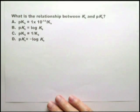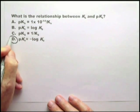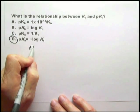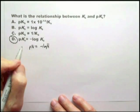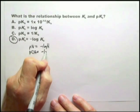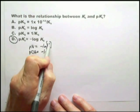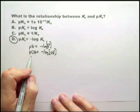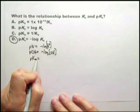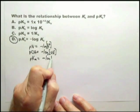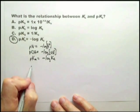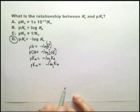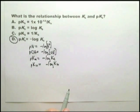This relationship is so important you just have to remember it. It occurs for KB, for pH equals minus log H, for pOH equals minus log OH minus, and for pKa equals minus log Ka, and for water, pKw equals minus log Kw. You simply have to remember these relationships.